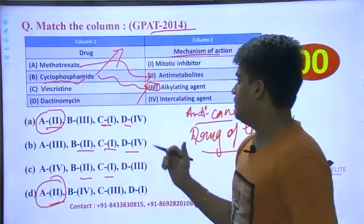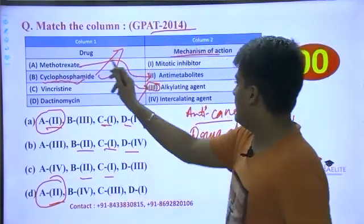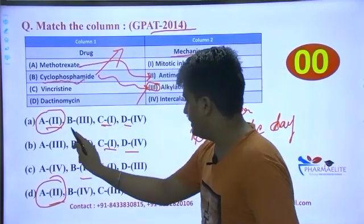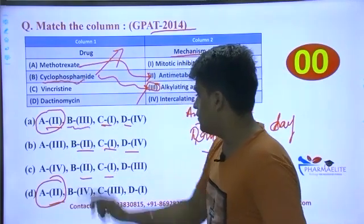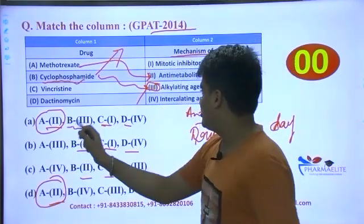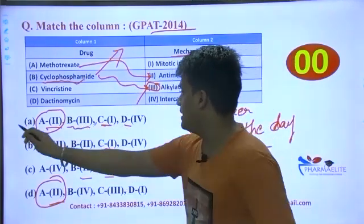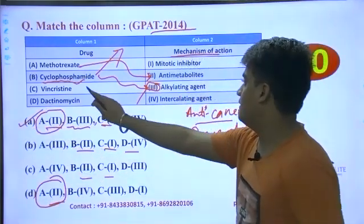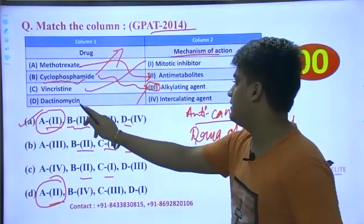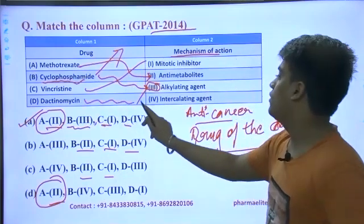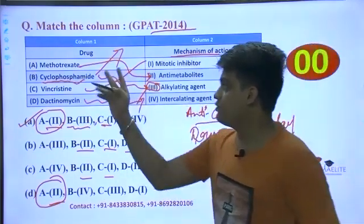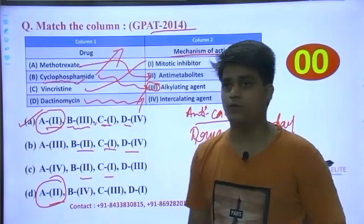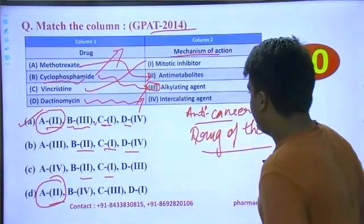So A is 2 and B is 3. A2, B3 is confirmed — so the answer is option A. I don't need to check whether C was 1 or D was 4. Within just two options I could solve the entire master column, and yes, that is the smarter way to approach it.